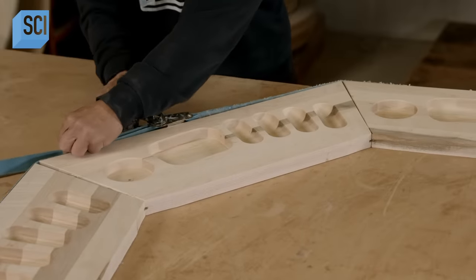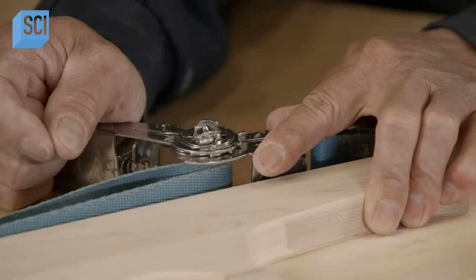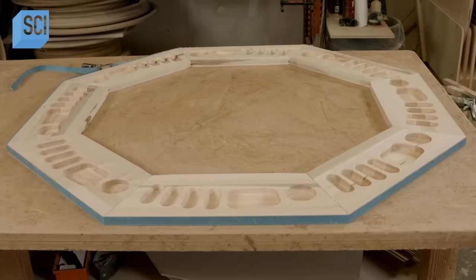He pulls the eight rim segments tightly together with a strap clamp and leaves the glued configuration to cure overnight. This permanently bonds the table rim segments.